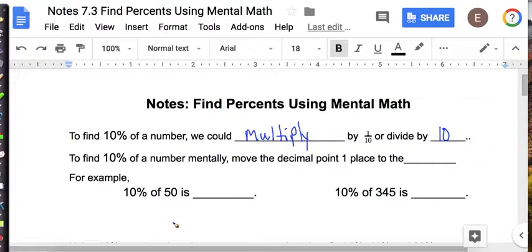To find 10% of a number mentally, all we need to do is move the decimal point one place to the left.